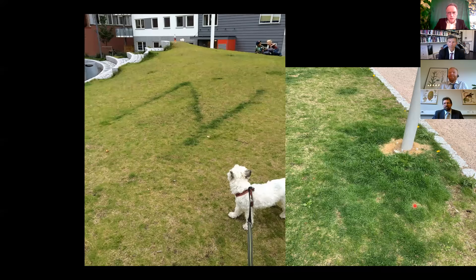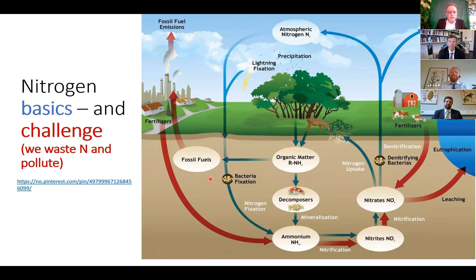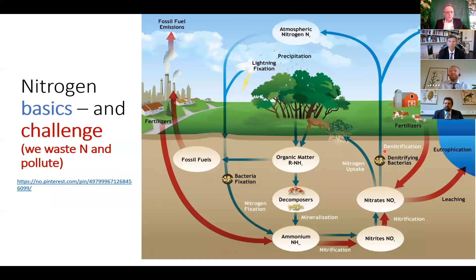Nitrogen is an element that naturally cycles between the atmosphere — since air is mainly composed of nitrogen — and into the ground, where bacteria fix nitrogen and also denitrify and release nitrogen back to the atmosphere. The trouble is that we as human beings have more than doubled the annual transfer of nitrogen into biologically available forms. This leads to a range of environmental problems; for example, anthropogenic nitrous oxide contributes to destruction of the ozone layer and is the third largest contributor to global warming.